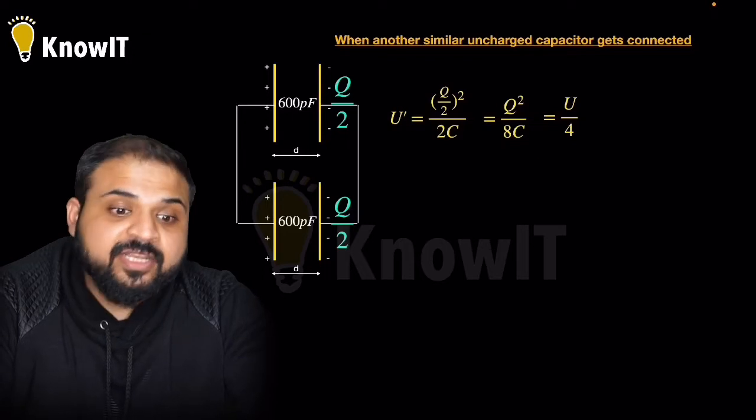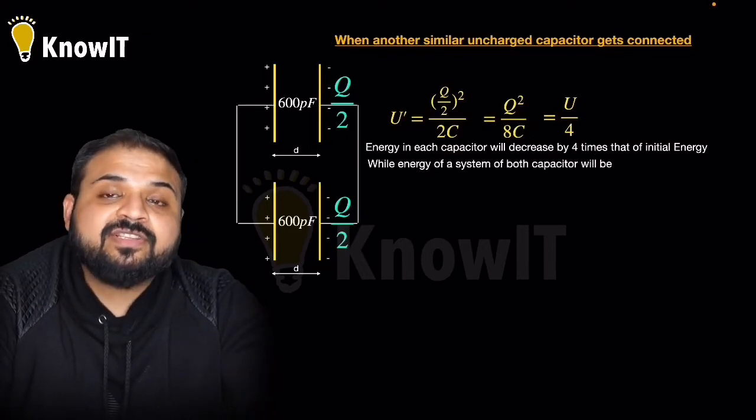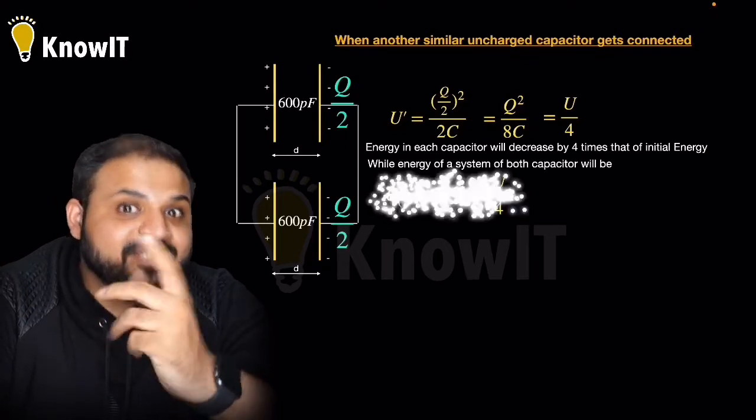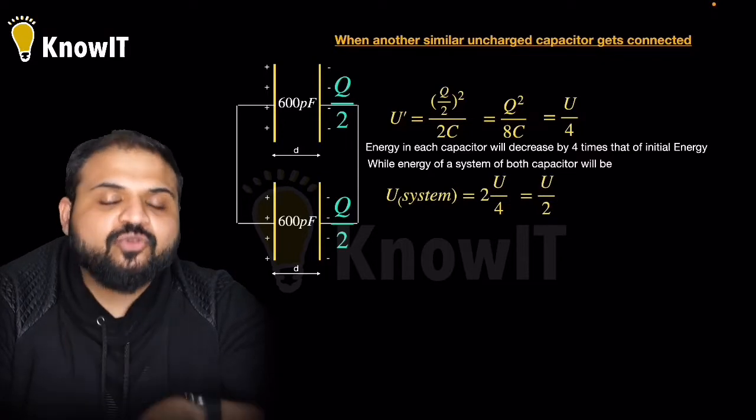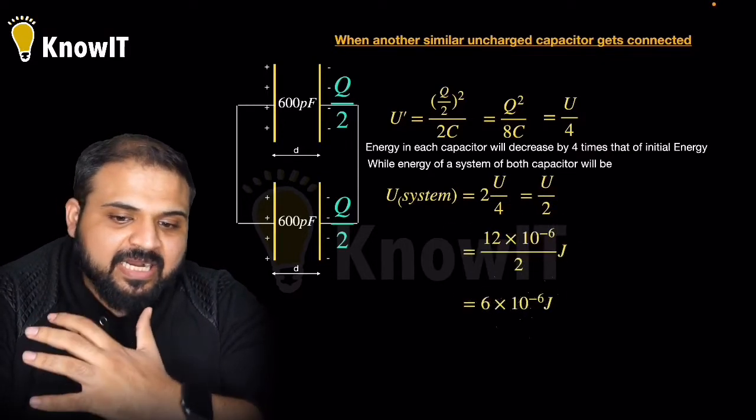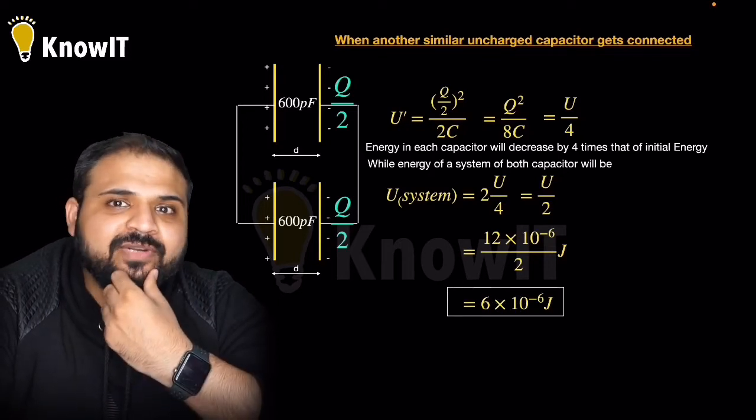If we want to calculate total energy of the system, energy of both capacitors will be U by 4 plus U by 4, that turns out to be U by 2, that is 2 times U by 4. So this energy is 6 into 10 power minus 6 joules. The remaining 6 into 10 power minus 6 joules is lost.